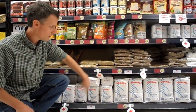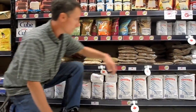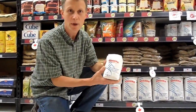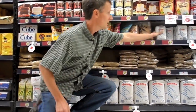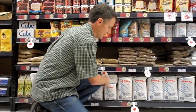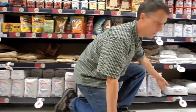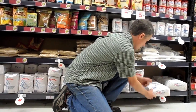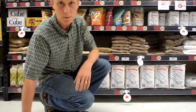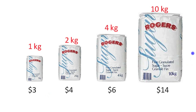We're at the grocery store looking at buying a bag of sugar, and we're going to use rates to figure out which one's the best buy. There are four different options: a one kilogram bag for three dollars, a two kilogram bag for four dollars, a four kilogram bag for six dollars, and a ten kilogram bag for fourteen dollars. You can use rates to compare the mass to the price.